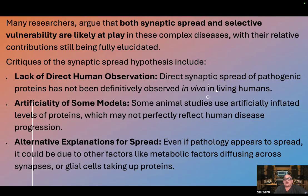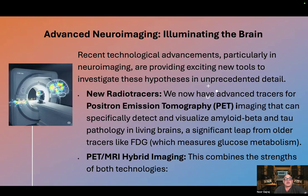Critiques of the synaptic spread hypothesis include lack of direct human observation — direct synaptic spread of pathogenic proteins has not been definitively observed in vivo in living humans. Some animal models use artificially inflated levels of proteins, which may not perfectly reflect human disease progression. Even if pathology appears to spread, it could be due to other factors like metabolic factors diffusing across synapses or glial cells taking up proteins.